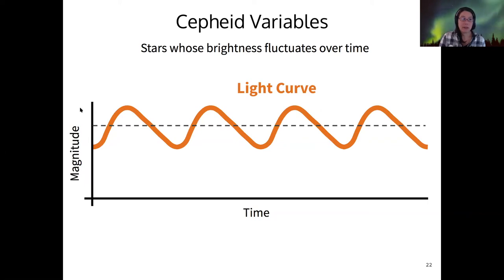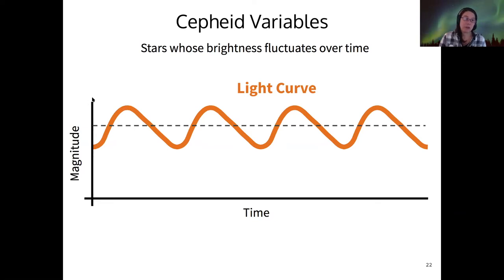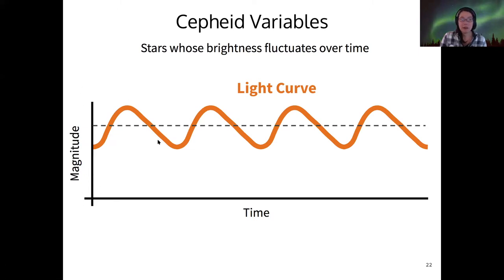This is the magnitude of our star plotted over time. We set the magnitude scale so that negative values are up here and positive are down here. It goes brighter and dimmer over time in a regularly repeating periodic fashion.